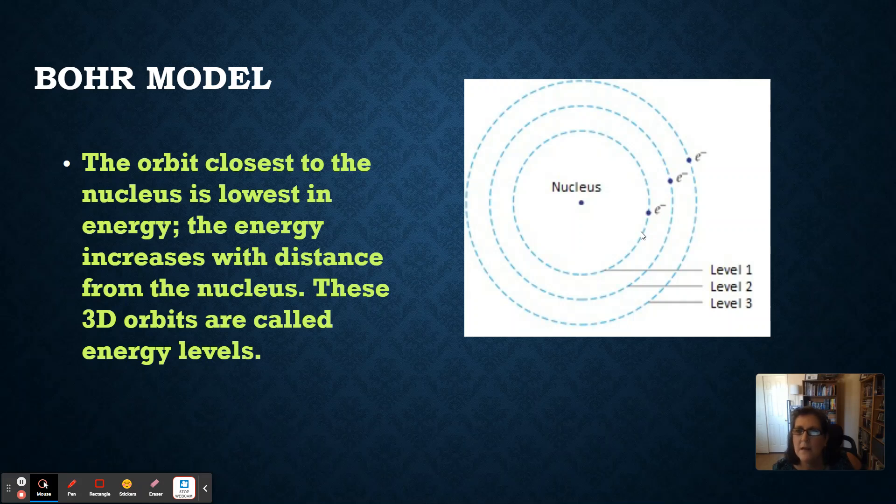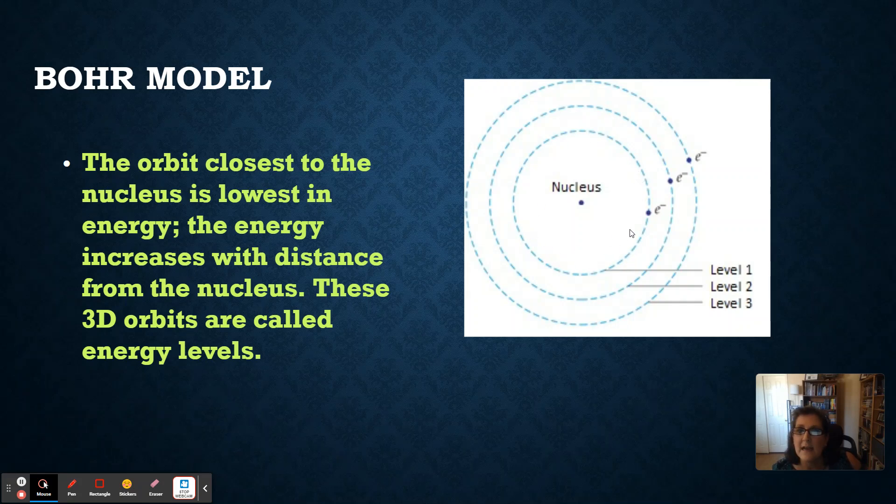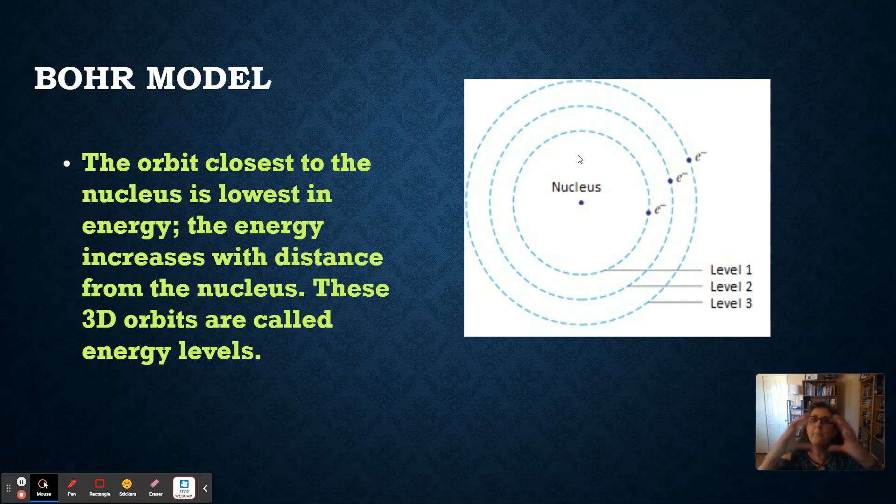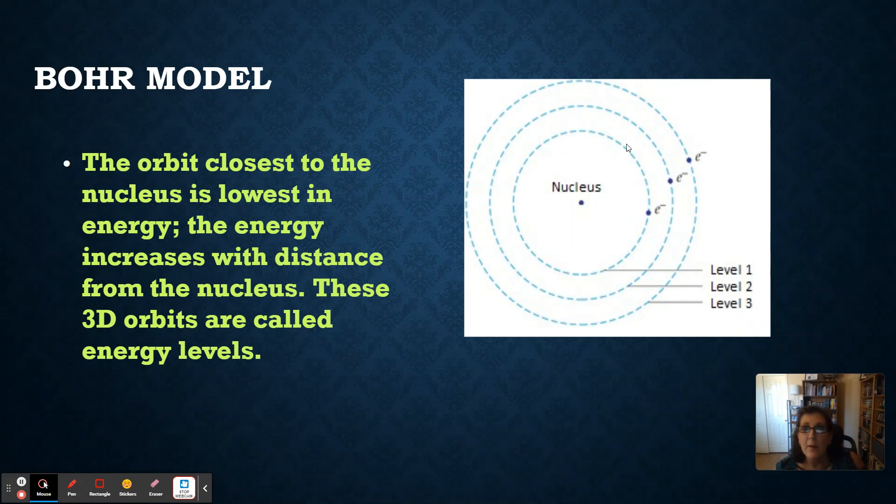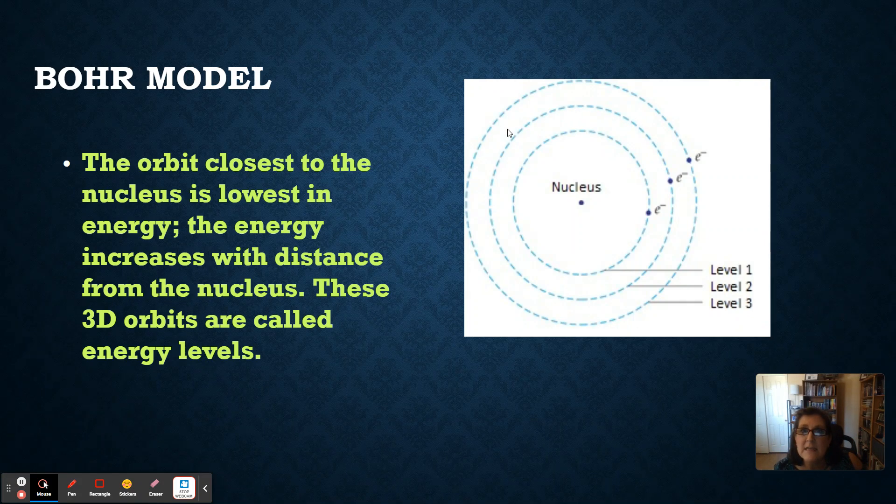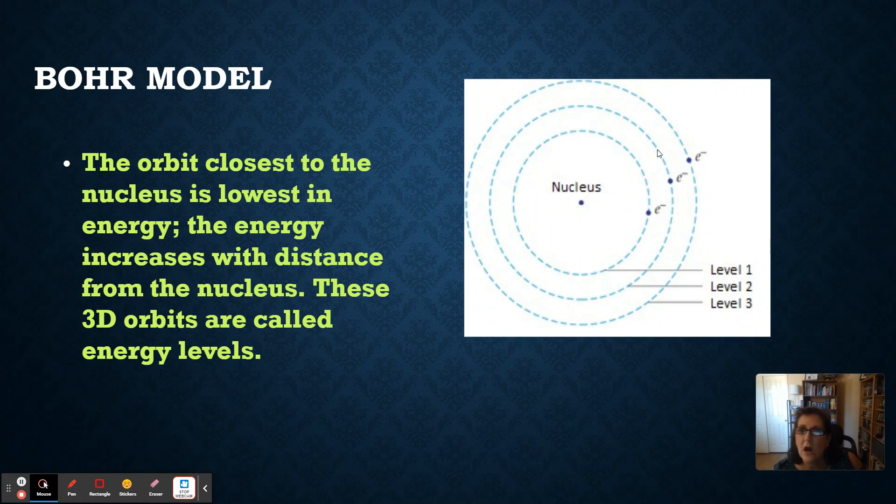There's an electron on it right there. So, this is energy level one, and again, this is a cross section. So, again, this is like a baseball around that marble nucleus. Then we have energy level two here. You can see with my cursor energy level two. So, that's our volleyball around the nucleus. And then we jump out to level three. That's our beach ball around the nucleus.